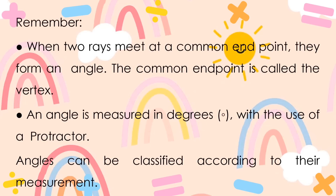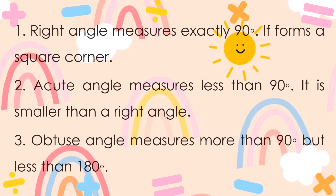Always remember: when two rays meet at a common endpoint, they form an angle, and the common endpoint is called the vertex. An angle is measured in degrees with the use of a protractor. Angles can be classified according to their measurement. A right angle measures exactly 90 degrees and forms a square corner. An acute angle measures less than 90 degrees. An obtuse angle measures more than 90 degrees but less than 180 degrees.